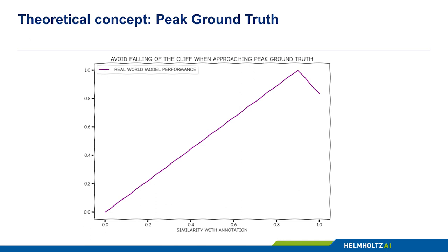Here, the theoretical concept of Peak Ground Truth (PGT) is introduced. PGT marks the point beyond which increased similarity with the reference annotation stops translating to better real-world model performance (RWMP).